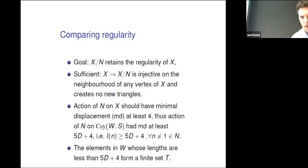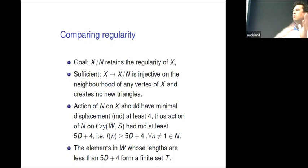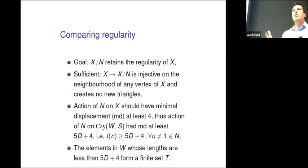Now, here's a problem. The general philosophy is we want infinitely many finite graphs forming an expanding family. Our strategy is to have one infinite graph, quotient it out by finite index normal subgroups, and prove that family is expanding. But here's a problem: what if I destroy the regularity of X? I assume my infinite graph had finite vertex links — say everybody has 17 neighbors — but after quotienting, some of them get a different number of neighbors. I need to ensure that the regularity is retained when I take the quotient.